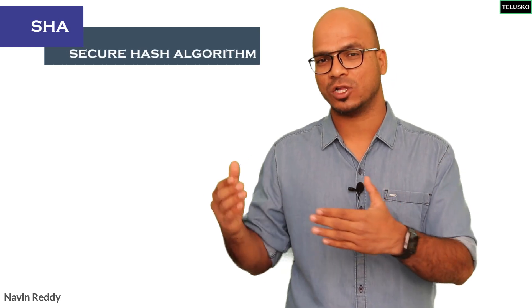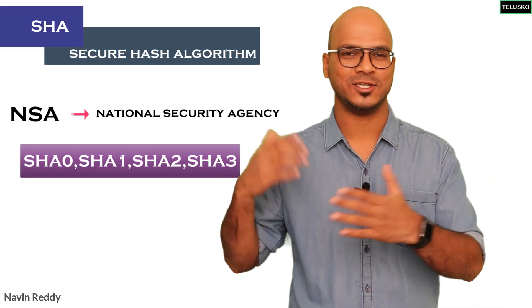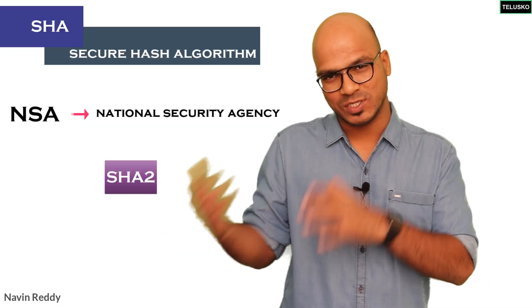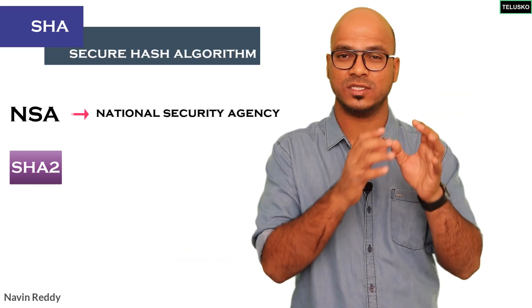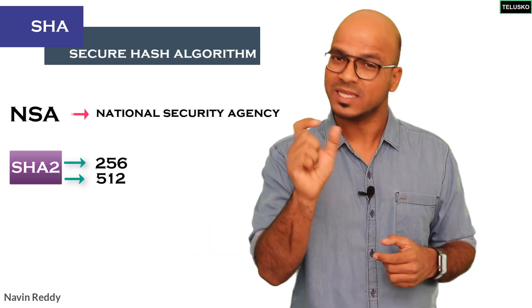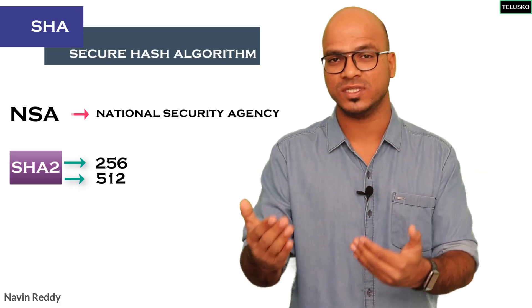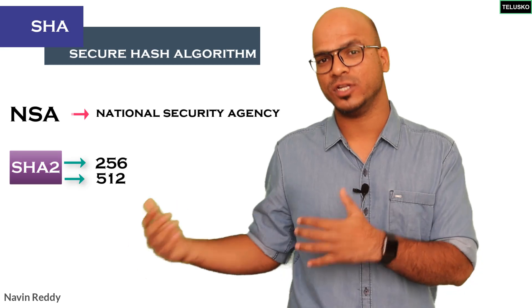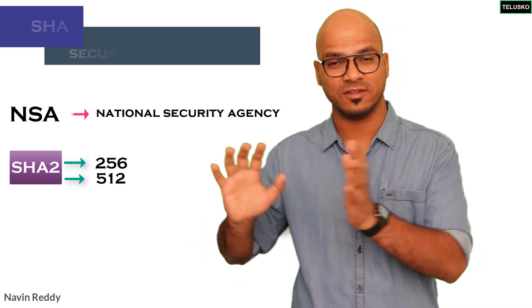Now people are moving towards SHA — Secure Hash Algorithm — which is built by the NSA. There are different versions: SHA0, SHA1, SHA2, and SHA3. In blockchain we normally use SHA2, which is actually a family. The two popular versions are SHA256 and SHA512. These numbers represent the output bit size — SHA256 outputs 256 bits and SHA512 outputs 512 bits.